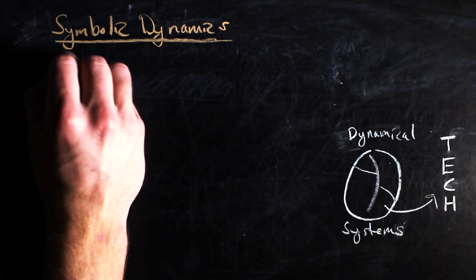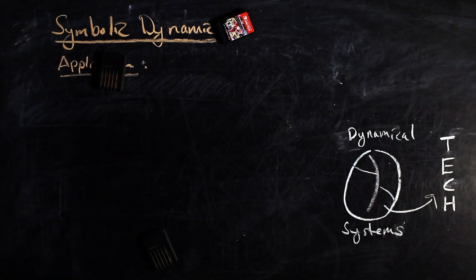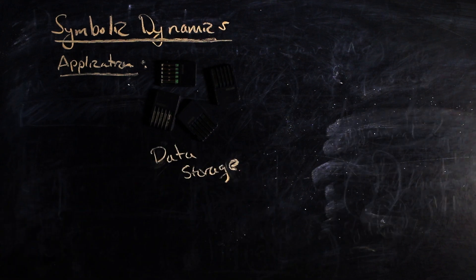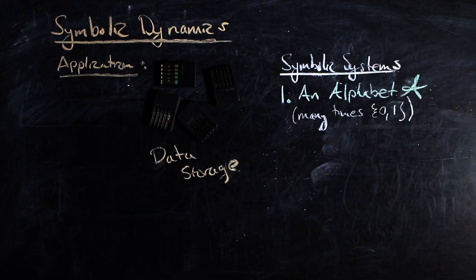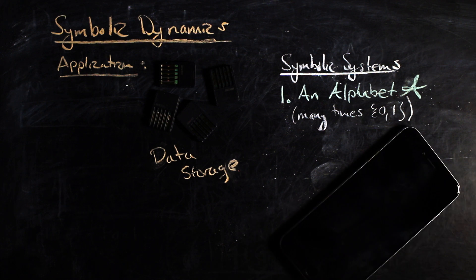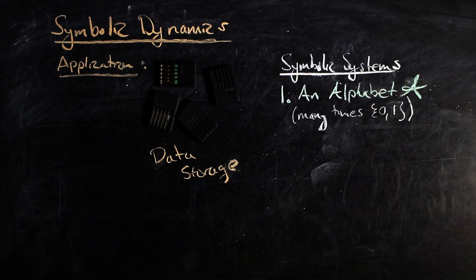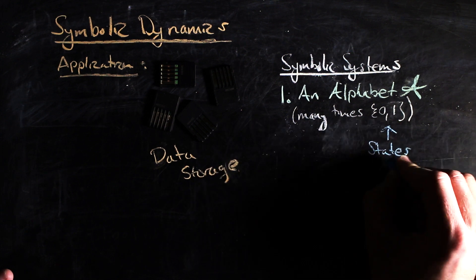As it turns out, symbolic dynamics plays a huge role in data storage. In symbolic dynamics, we concern ourselves with a finite alphabet—many times it's 0,1, a big hint at the computer science applications. The alphabet is a set of symbols that usually represents states of the dynamical system.